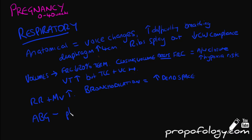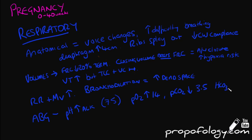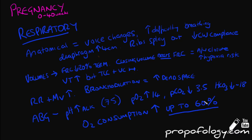In terms of ABGs, you'll see an alkalotic picture of about pH 7.5, a PO2 of 14 as oxygen increases in the blood, a decrease in PCO2 to about 3.5 due to hyperventilation, and bicarbonate reducing to about 18. An extremely important concept is that oxygen consumption increases by up to about 60% by term, which increases the risk of developing hypoxia during the induction of anaesthesia.